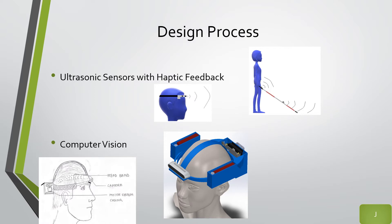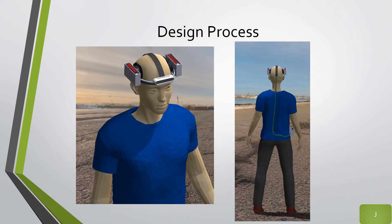One iteration involved a system where the processing unit, battery, motor, and camera are all on the head. The final iteration moved the processing unit near the waist, where it can be clipped onto a person's belt or pants. This isolates the system so there is no heat on the person's head, making it lighter and more comfortable for the user.